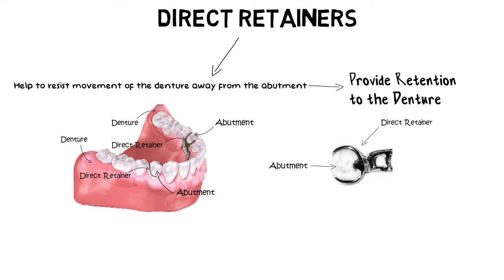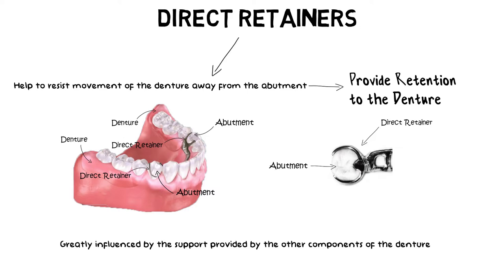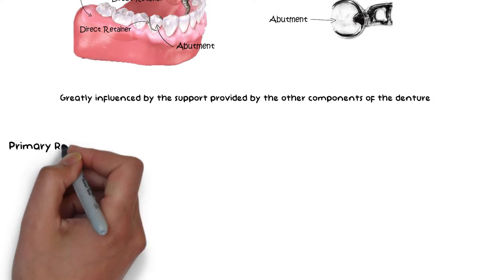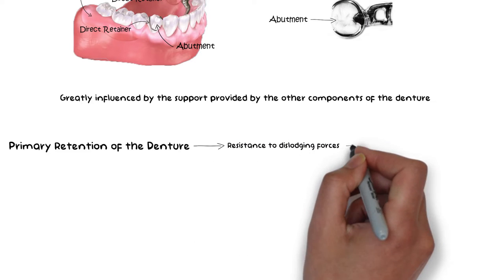The ability of the direct retainer to resist these forces is greatly influenced by the stability and support provided by the major connectors, minor connectors, and rests. Although the forces that act to move the denture away from the tissue are not as great as those causing stress towards the tissue, the removable partial denture must still have adequate retention in order to resist reasonable dislodging forces.